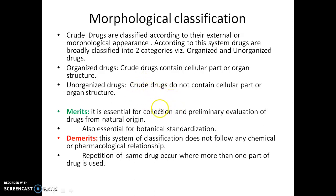The major advantages of morphological classification are that it is essential for the collection and preliminary evaluation of drugs from natural origin — you need to know which part is useful as a source of the drug or active ingredient, and you can find the drug by its morphology. It is also essential for botanical standardization, which helps prevent adulteration.